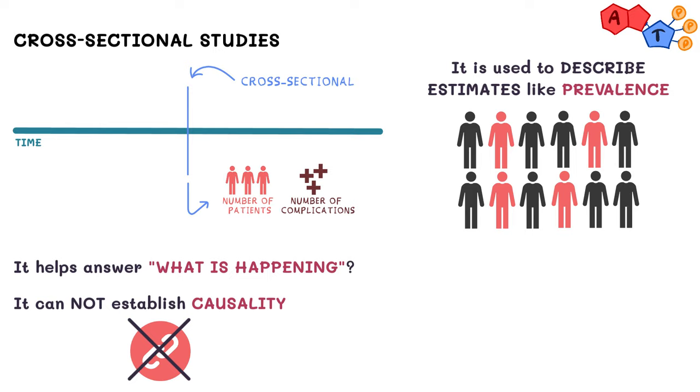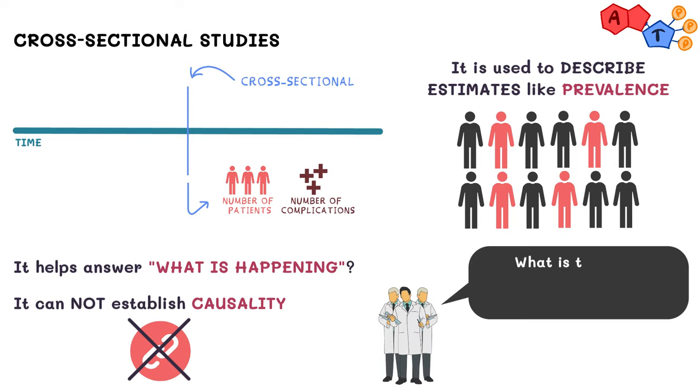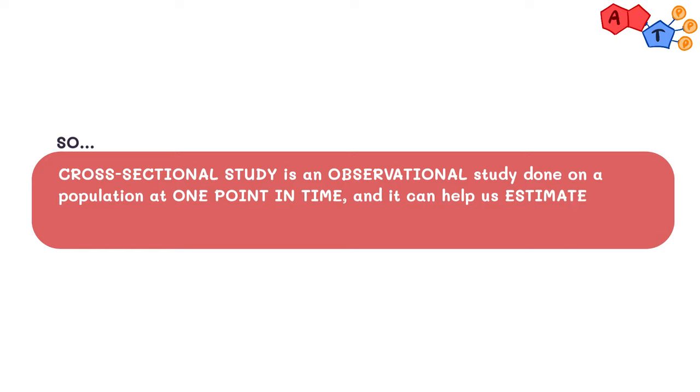An example of this type of study would be a group of researchers trying to find the most common complication of, let's say, multiple sclerosis. They're just trying to describe the prevalence of a certain condition in those with multiple sclerosis. So cross-sectional study is an observational study done on a population at a point in time and it can help us estimate prevalence.